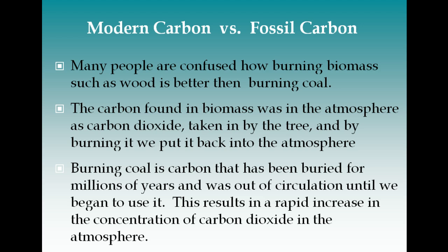In developing countries, most people depend on subsistence energy: wood, charcoal — which is a more efficient form of wood and therefore more expensive — and biomass from animal manure, mostly used just for their own energy needs. People might ask how burning biomass like wood is better than burning coal, since coal came from plant matter too. The carbon in biomass like wood or charcoal was in the atmosphere not so long ago as CO₂ taken in by the tree. When we burn it, we release that CO₂ back. Burning coal, however, releases carbon that was buried for millions of years and was not in recent circulation in the atmosphere.